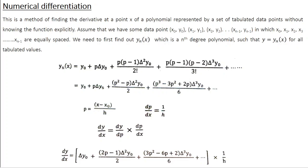The first step is to establish a relation between x and y. From the previous class we know this relation is a polynomial equation: y equals y_n(x), an nth degree polynomial. The general expression for y_n(x) is y₀ plus p·Δy₀ plus p(p−1)·Δ²y₀/2! plus p(p−1)(p−2)·Δ³y₀/3!, all the way to the (n−1)th term, where p equals (x − x₀)/h, x₀ is the first x point, and x is the value at which you want to perform the differentiation.